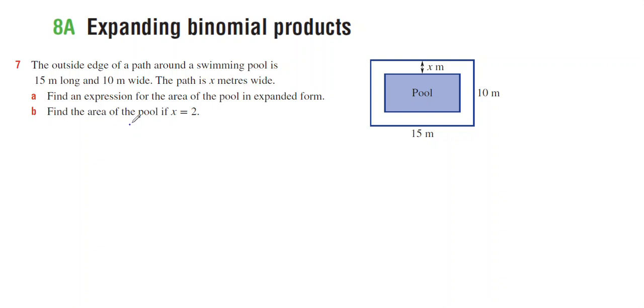Question number seven in 8a. The outside edge of a path around the swimming pool is 15 metres long, so it's 15 along there and 10 metres wide and the path is x metres wide. Find an expression for the area of the pool.